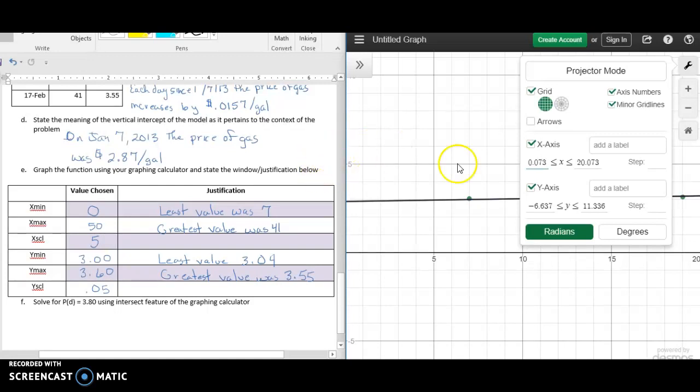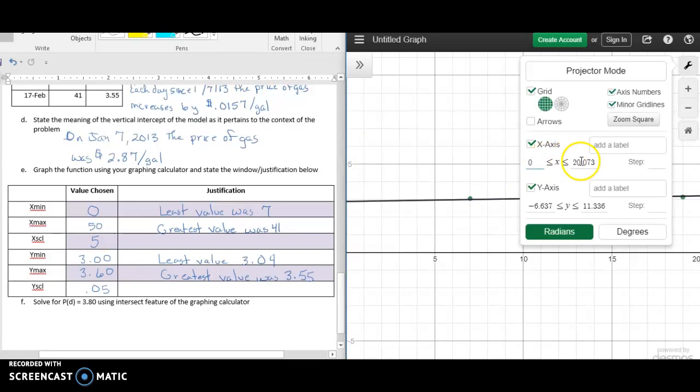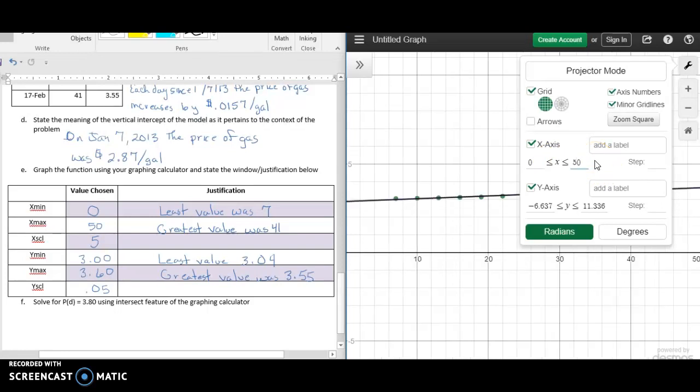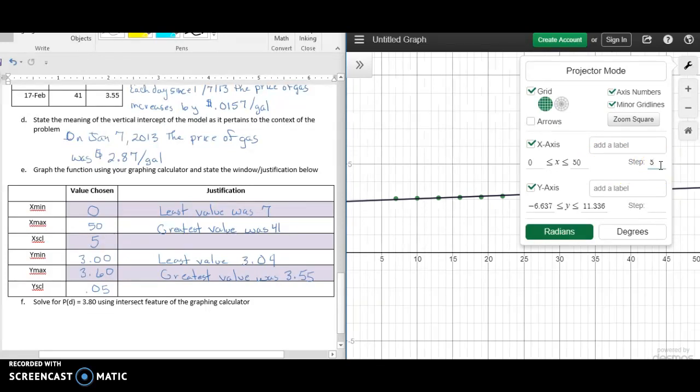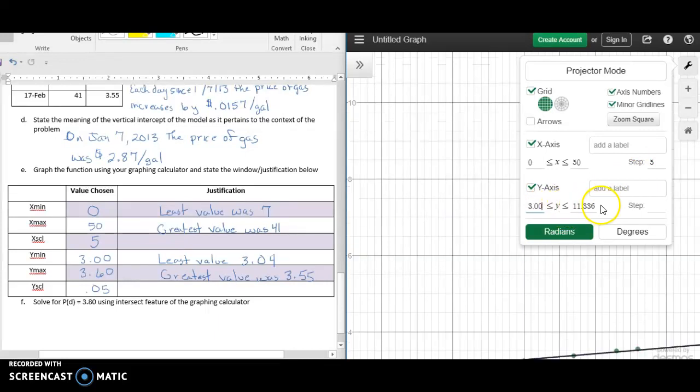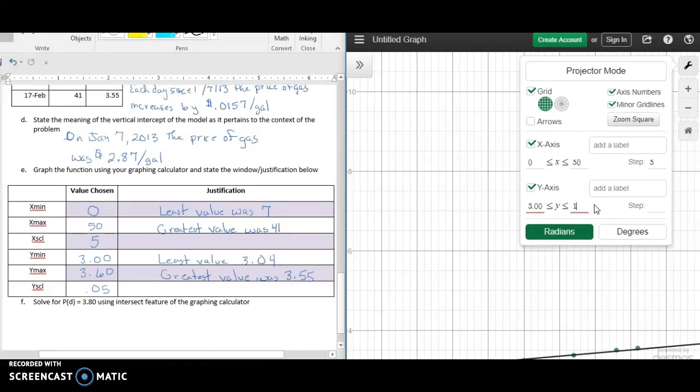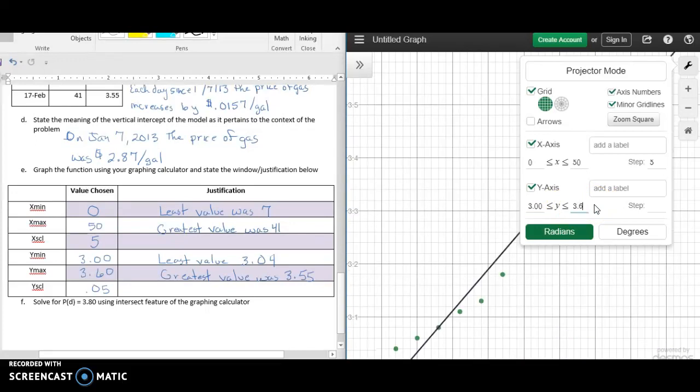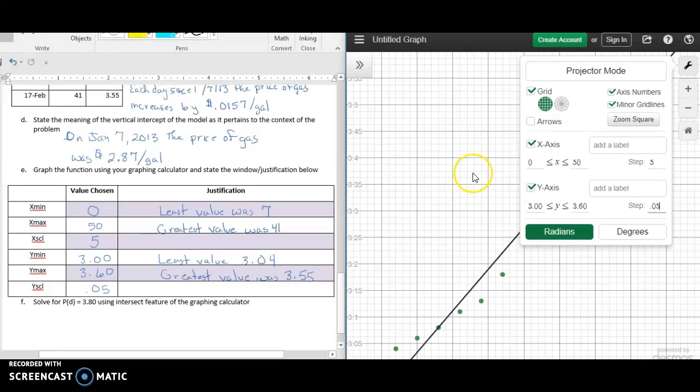Our X's are going to go from 0 to 50, and we want to count by 5. That would be the step. Then we want our Y's to go from $3 to $3.60, and we want to go by 0.05.